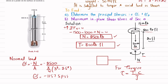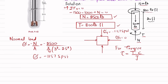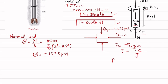Representing on the stress element: there is no stress in the x-direction, so σx = 0. In the y-direction we have compressive stress, so σy = -1157.5 PSI.